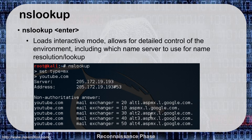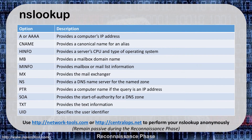In interactive mode, you just type NS Lookup and hit enter. You can then set certain types and modifiers — for example, setting type to MX for Mail Records. By doing this, I can search for the mail records associated with YouTube.com and get those mail exchangers displayed to the screen. There are many options for NS Lookup. For remaining anonymous, a tool like centralops.net is one of my favorites — it keeps us more passive during reconnaissance, since we're using their server to query, not our own machine.